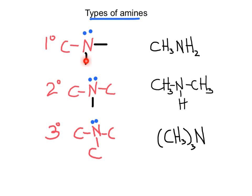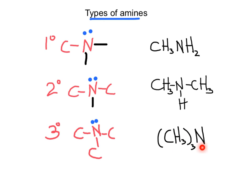This is a primary amine because we have the nitrogen bonded to one carbon — it doesn't matter how long the hydrocarbon chain is. We see here that this is a secondary amine because the nitrogen is bonded to two carbons. This is a tertiary amine because the nitrogen is bonded to three carbons. Two methyl groups indicate a secondary amine, and bonding to three different alkyl groups gives a tertiary amine.